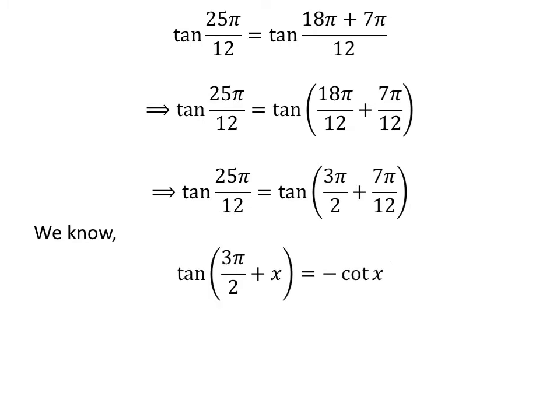We know the trigonometry identity: tangent of 3 times pi upon 2 plus x is equal to minus cotangent of x. The proof of this identity is given in the video appearing in the upper right corner of this video. The link of the video is also given in the description section.